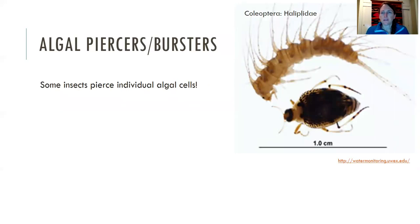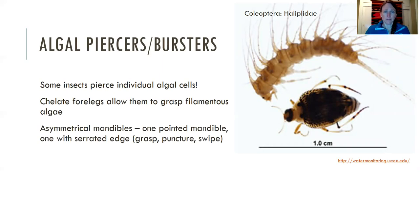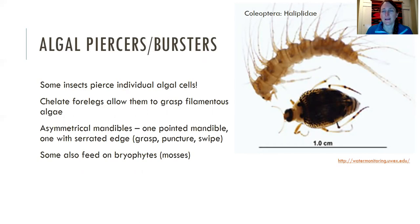Moving on to algal piercers and bursters. Some insects can pierce individual algal cells and eat the cytoplasm from inside. They might also have chelated forelegs that allow them to grasp filamentous algae and pop cells open. Sometimes they have asymmetrical mandibles where one might be pointed and the other has a serrated edge, so they can grasp, puncture, and then swipe the material into their mouths. Some might also feed on mosses and bryophytes. This is a helipolidae beetle larva and adult — some of the most different-looking larvae and adults.